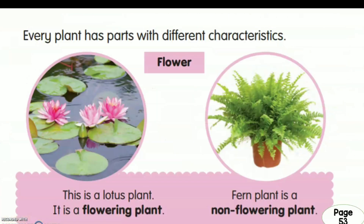These notes are from the textbook page 53 — nota-nota ini adalah daripada buku teks buka surat 53. Every plant has parts with different characteristics — setiap tumbuhan mempunyai bahagian-bahagian dengan ciri yang berlainan.